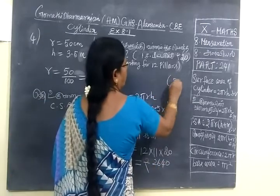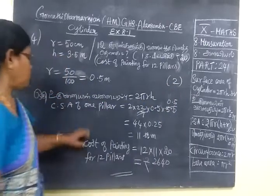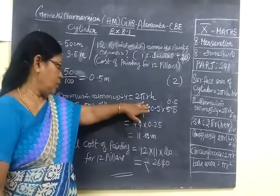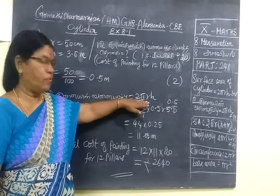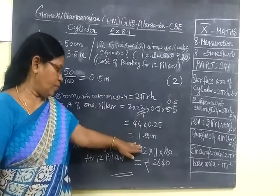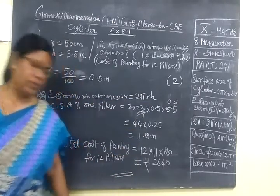This will come under formula. So you are just finding the area, curved surface area of one pillar. Then afterwards you find the total cost. Thank you.